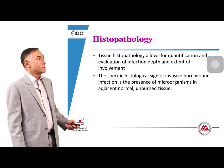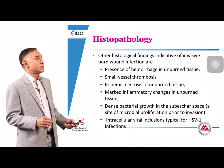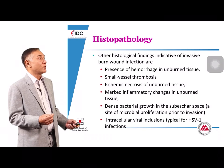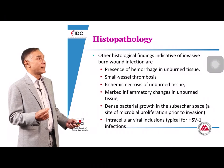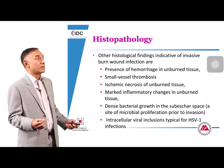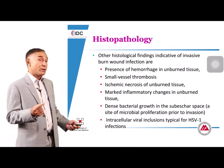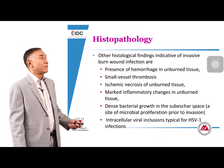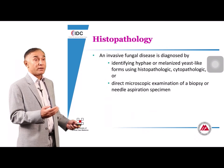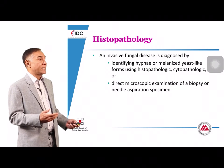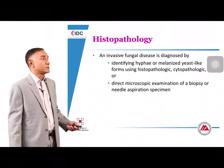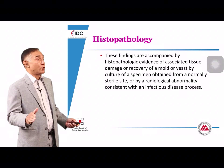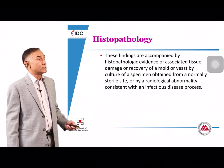Histopathology shows many typical features: hemorrhage in unburned tissue, small vessel thrombosis, and dense bacterial growth in the subeschar space. Herpes simplex will show intracellular viral inclusions, and fungi such as Candida and Aspergillus can also be identified. Always obtain a burn wound biopsy when the diagnosis of burn wound sepsis is suspected.